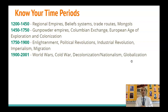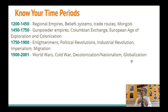We got 1200 to 1450: regional empires, belief systems and how they impact those regional empires, trade routes, and the Mongols. 1450 to 1750: gunpowder empires, Columbian exchange, age of exploration and European colonization. 1750 to 1900: enlightenment, political revolutions, industrial revolutions, imperialism, migration. And 1900 to 2001: world wars, cold war, decolonization and nationalism, globalization. Screenshot this, take a picture of it. You got to know these — you should have these memorized off the top of your head.